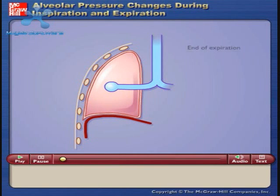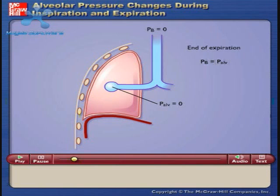At the end of expiration, barometric air pressure and alveolar air pressure are equal. Therefore, no movement of air into or out of the lungs takes place.